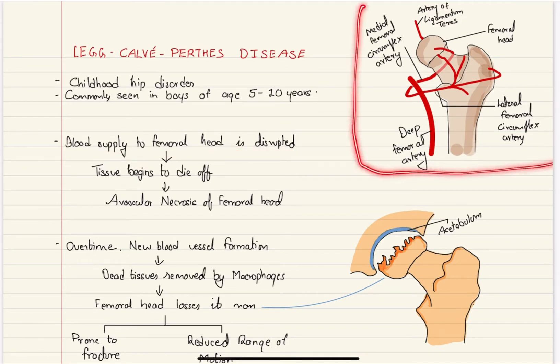Here in this picture, you can appreciate the head of the femur, which is mainly supplied by three arteries. Two arteries—the medial femoral circumflex artery and the lateral femoral circumflex artery—come from the deep femoral artery, and the third is the artery of the ligamentum teres. These three arteries are mainly responsible for supplying blood to the femoral head. If these arteries fail to supply blood, this can lead to Perthes disease.